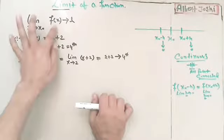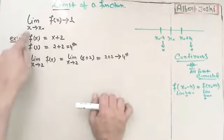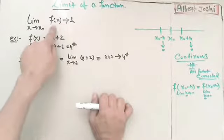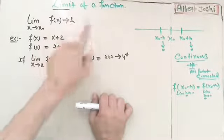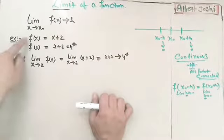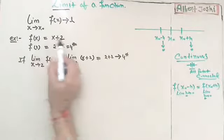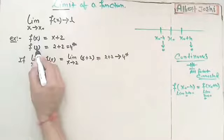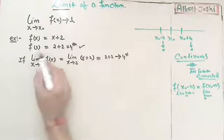Whenever you have any function, and if x is converging to 0 — actually this is the meaning of convergence — if x is converging to x0, then the function will converge to any point L. For example, f of x is x plus 2. If you place x equal to 2, then you get 2 plus 2 equal to 4, which is the objective value for this function.